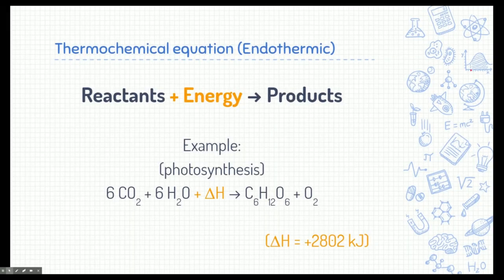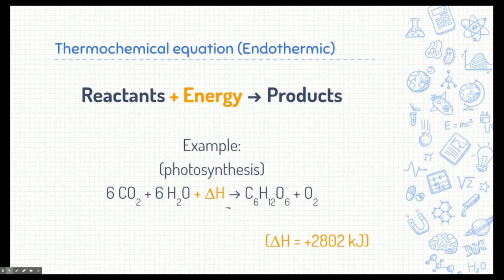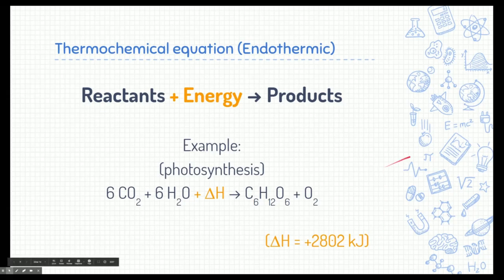The thermochemical equation for endothermic reactions shows energy as part of the reactants — these reactants need to absorb energy before the reaction happens, then create products. An example is photosynthesis: carbon dioxide, water, and energy — from the sun — react to create sugar and oxygen. In this thermochemical equation, the total energy change is 2,802 kilojoules being added to the reaction.